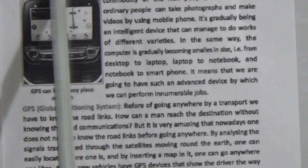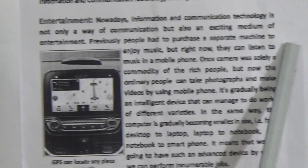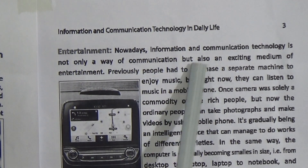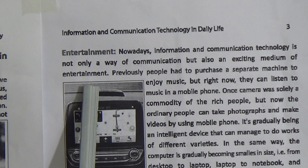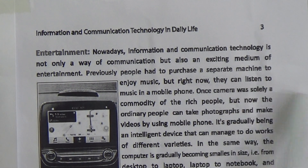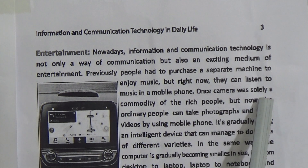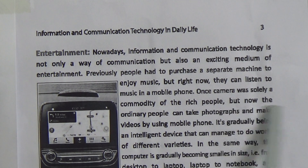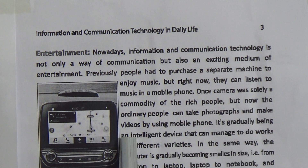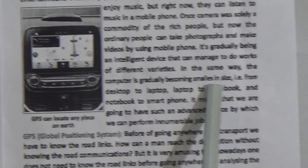Now we move to the next topic: Entertainment. Nowadays, information and communication technology is not only a way of communication but also an exciting medium of entertainment. Previously, people had to purchase a separate machine to enjoy music, but right now they can listen to music on a mobile phone. Once, a camera was solely a commodity of the rich, but now ordinary people can take photographs and make videos using a mobile phone. It is gradually becoming an intelligent device that can manage works of different varieties. Similarly, the computer is gradually becoming smaller in size.